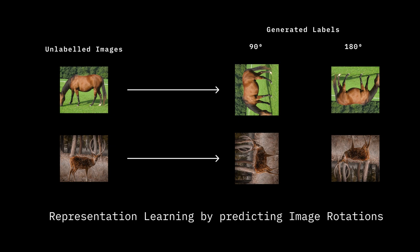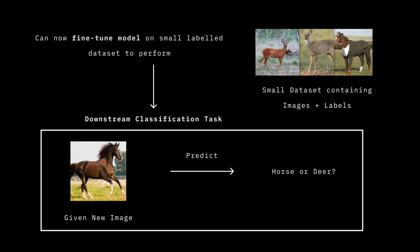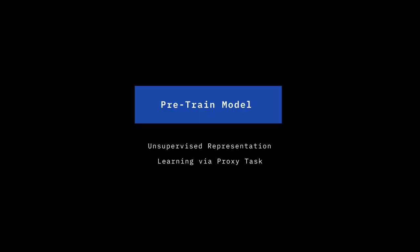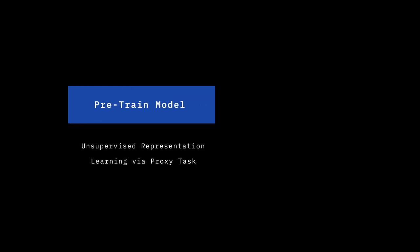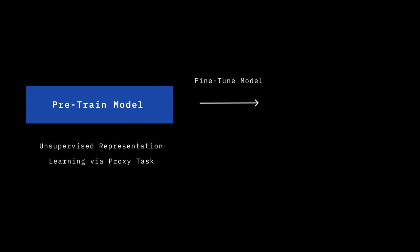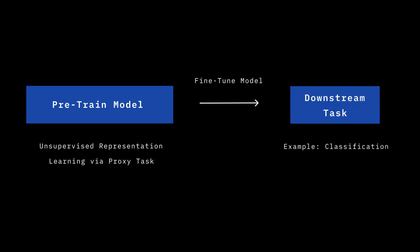Once you learn these representations and pre-train the model, you can fine-tune on a very small labeled dataset to perform a downstream task, such as classifying images as horses or deer. To drill down the concept: we take an unlabeled dataset, force the network to learn a good reusable representation by defining a proxy task or loss — this is our pre-trained model — then fine-tune on a small labeled dataset for our specific task. The representations are task-independent in theory, so you can reuse the same representations for different kinds of tasks.